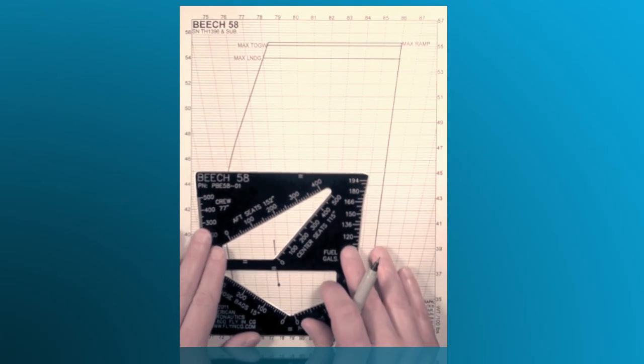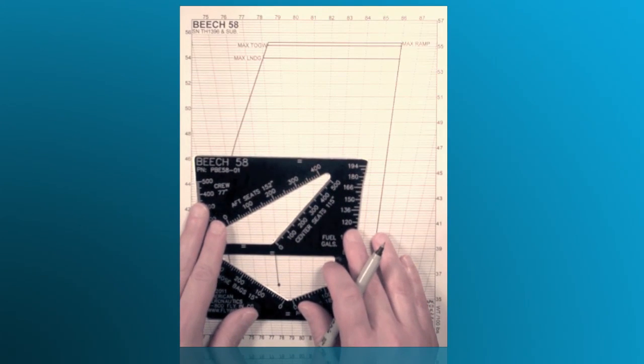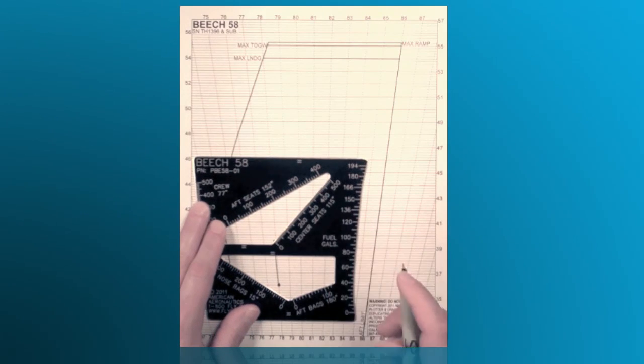Next, let's add the passengers in the center row of seats. Again, let's do 350 pounds by placing the zero tick mark on that last point plotted and drawing upscale.